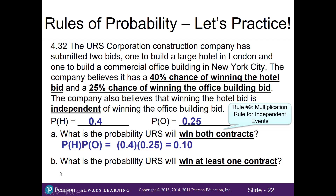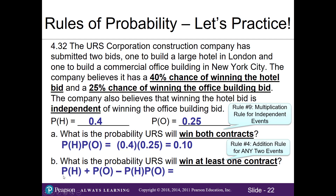Part b: what's the probability URS wins at least one contract? Using rule 4, the addition rule for any two events, we take P(hotel) plus P(office) minus P(hotel and office) to remove double counting. So 0.4 plus 0.25 minus 0.10 (from part a) equals 0.55 — a 55% chance of winning at least one contract.